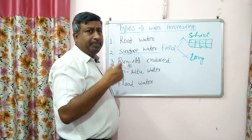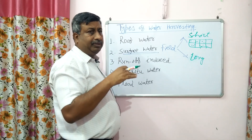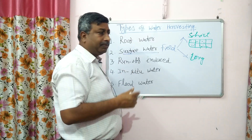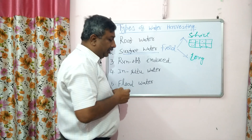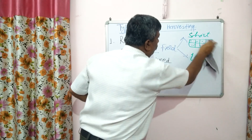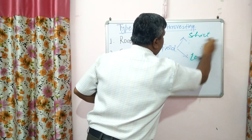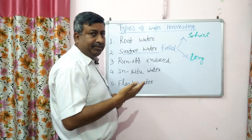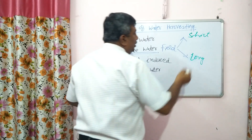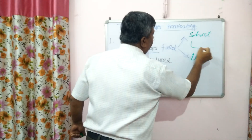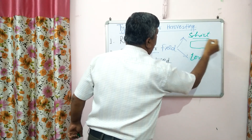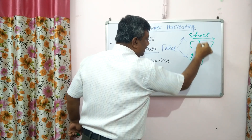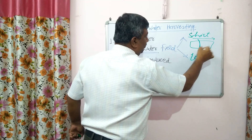In the case of short-term techniques, bunds are made in the field so that water remains in the field. Contour bunds are also made. What are contours? Contours are lines which are perpendicular to the slope.